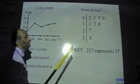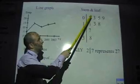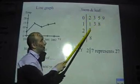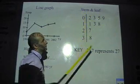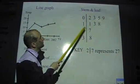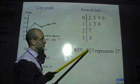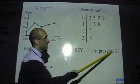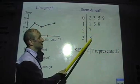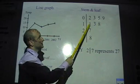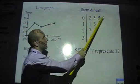Stem and leaf. Now, this is the stem, and the little numbers coming off are the leaves. So it kind of looks a bit like a tree. And the key here is having the key. Now this key, 2 slash 7, means 2 slash 7 represents 27. So this number is 27. This number is 38. This is 11, 13, 18, 23, 5, 9.